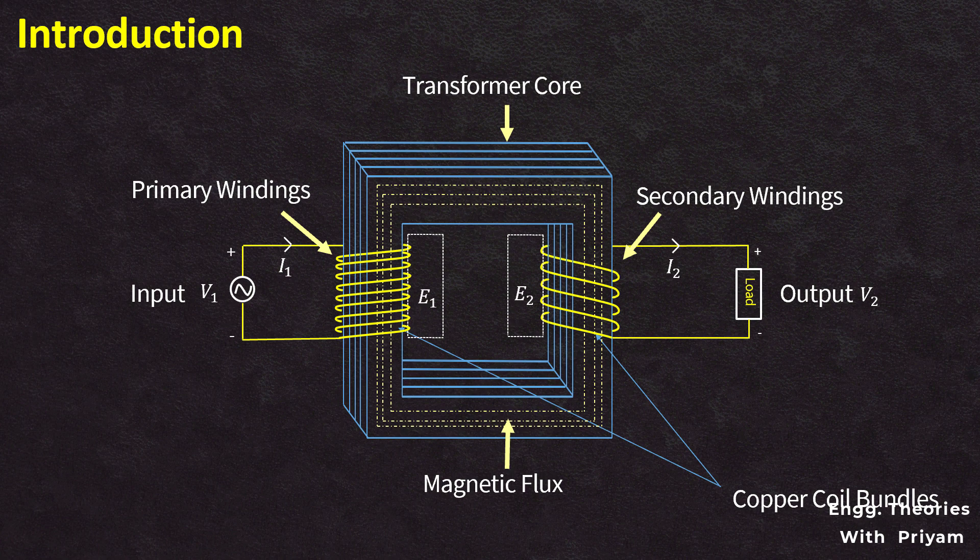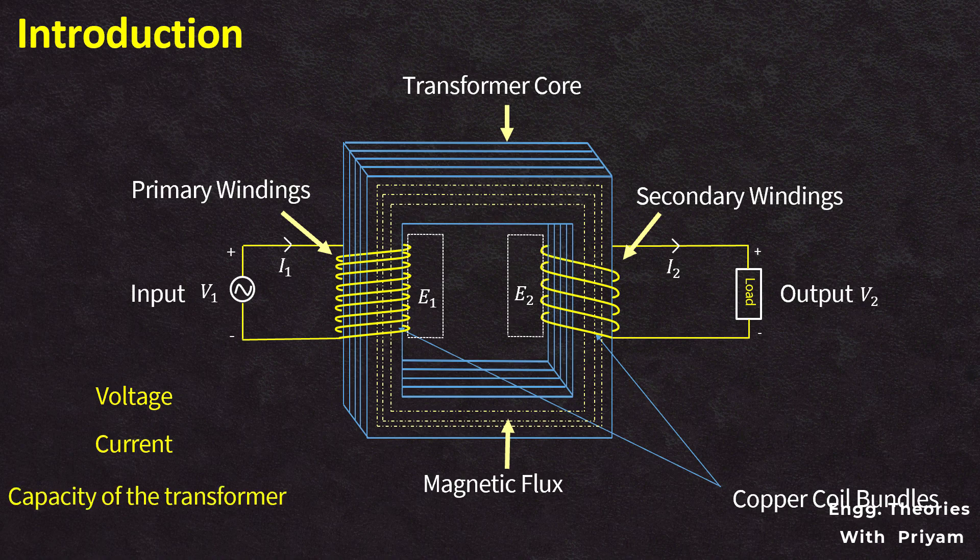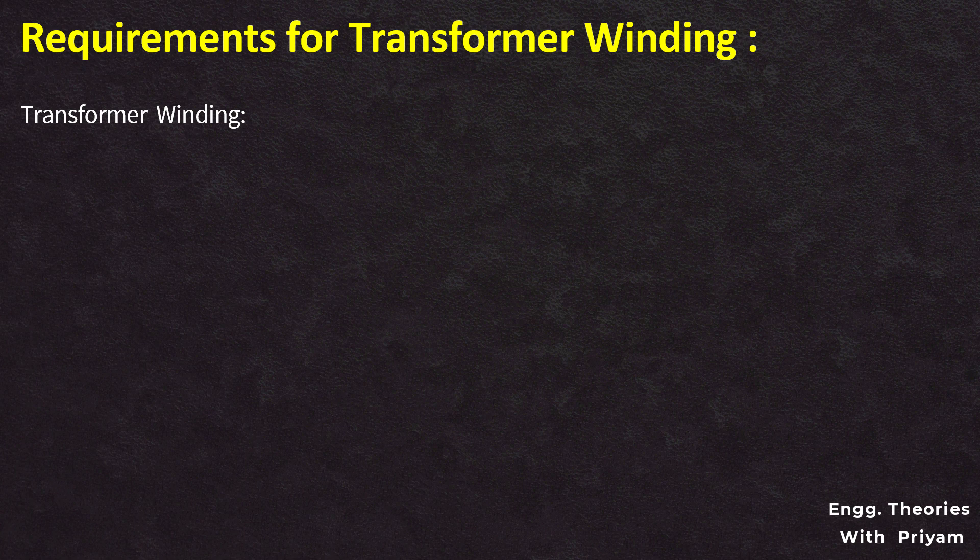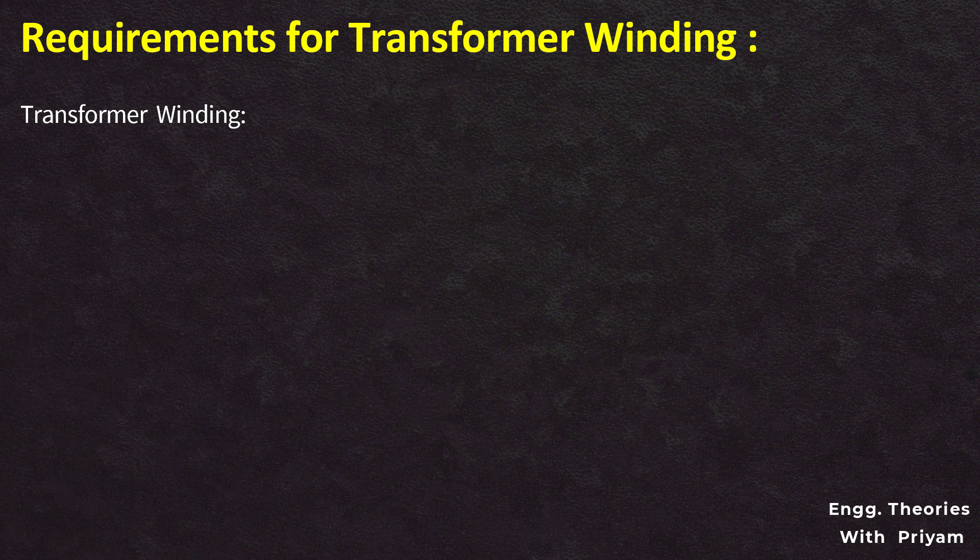The transformer windings are the most important parts of a transformer. There are different types of transformer windings available on the market. The transformer windings are chosen depending on many parameters such as voltage, current, and capacity of the transformer under construction. The selected transformer winding must comply with a number of requirements.